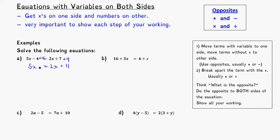Now I want to get this 2x to the other side of the equation. I ask myself, is that a positive 2x or a negative 2x? Since there's no sign in front of it, I'm going to assume it's positive. So the opposite of a positive 2x would be minus 2x. If I subtract 2x from either side, 5x minus 2x is equal to 3x, and 2x minus 2x cancel each other out, so I'm left with 3x equals 11.